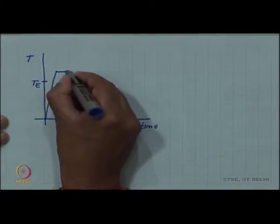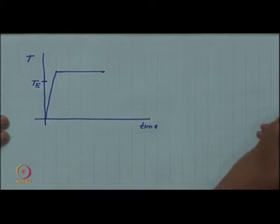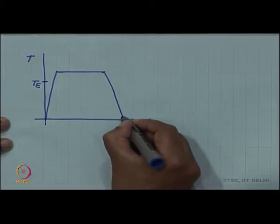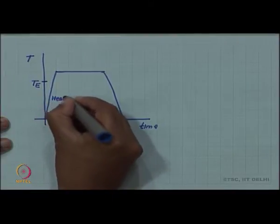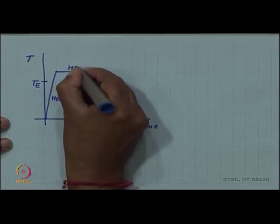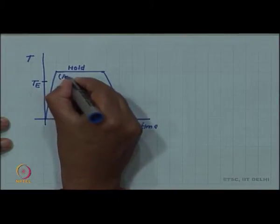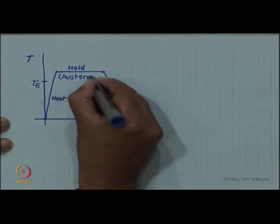The heating was for forming of the austenite and when you had full austenite, then you quenched. Holding is really for forming austenite. So sometimes this step is called austenitizing.